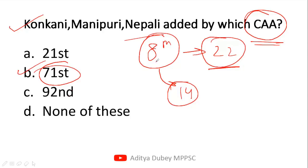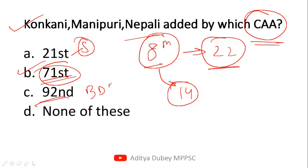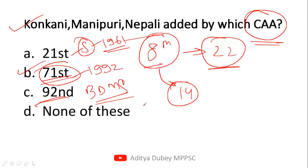The first constitutional amendment act from the perspective of the 8th Schedule was the 21st Constitutional Amendment Act. Under this, Sindhi language was added. Later, through another amendment, BDMS — means Bodo, Dongri, Maithili, and Santhali — languages were added. The 21st Constitutional Amendment Act happened in 2003. This is an important fact. Let's move on to the next question.